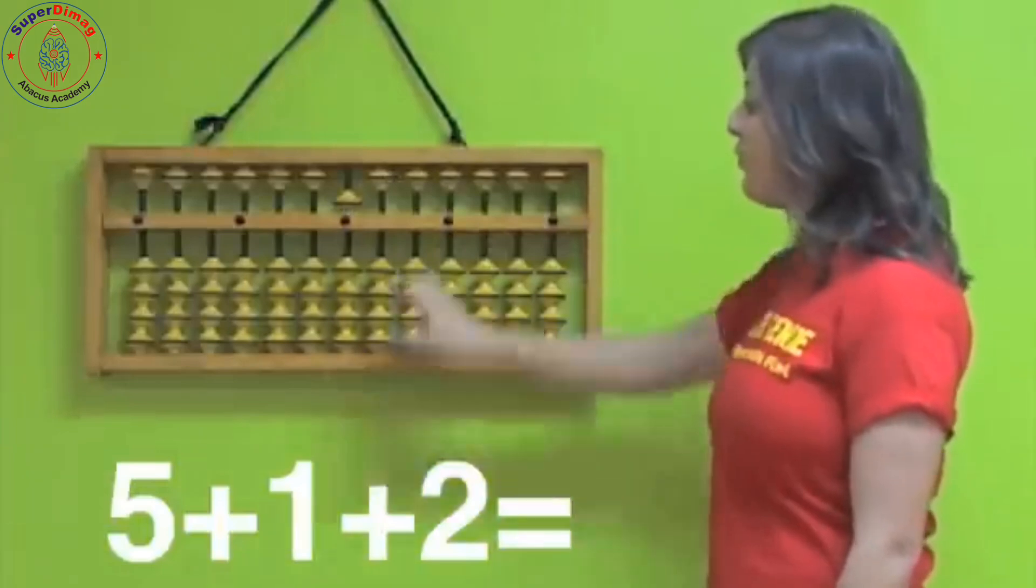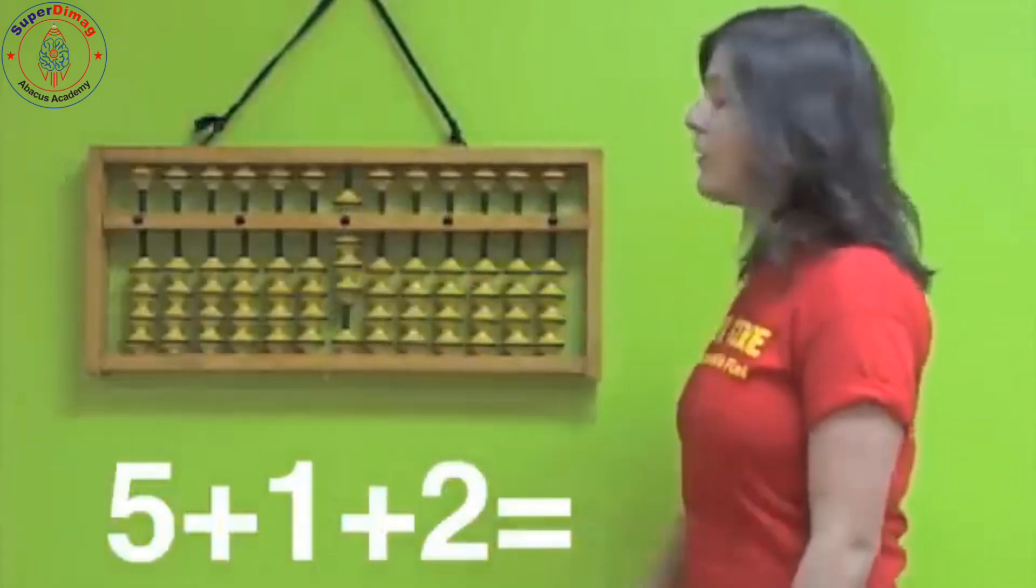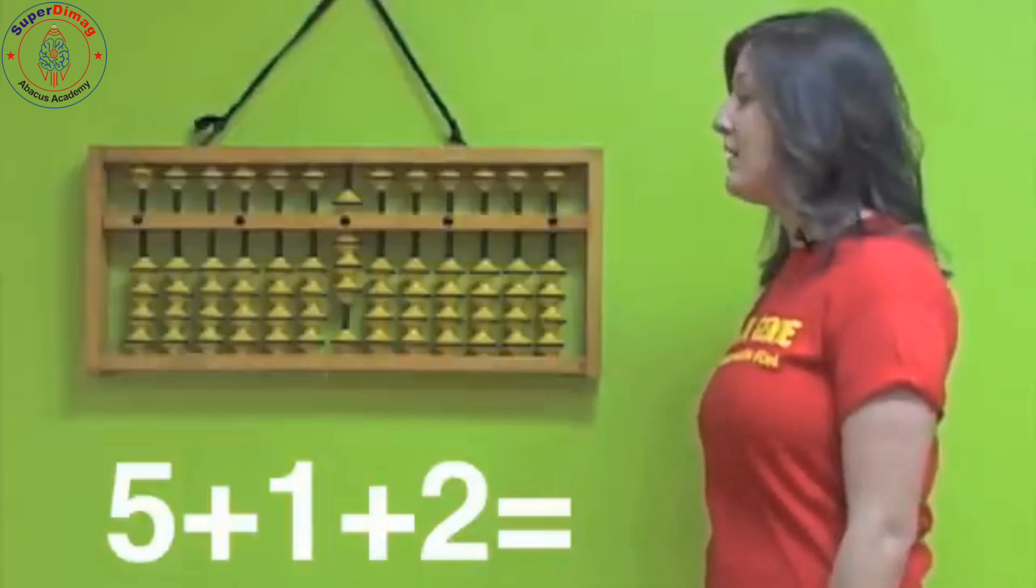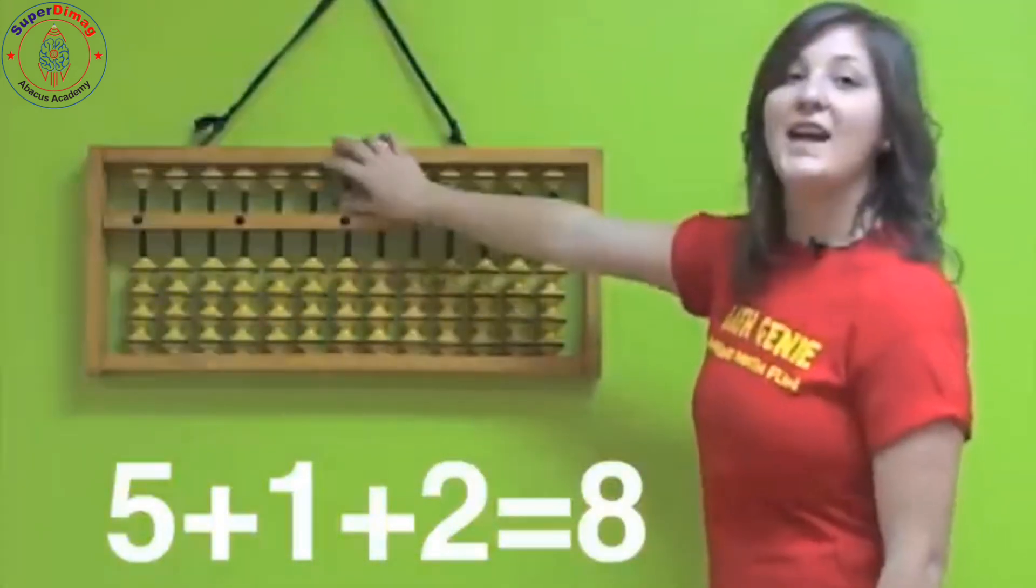Five, add one, and add two more. One, two. What's our answer? Five, six, seven, eight. Very good. You're getting it.